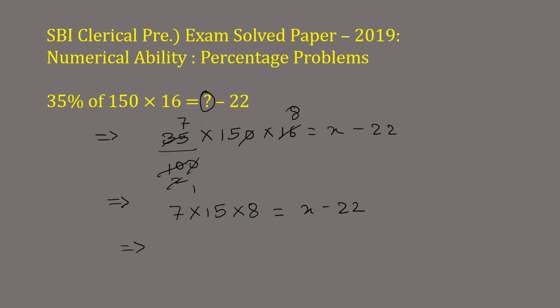Now from the right-hand side, this minus 22 comes to the left-hand side, it will become plus 22 is equal to x. Now x is equal to 840 plus 22, which is equal to 862. Now this question mark is equal to 862. This is the answer.